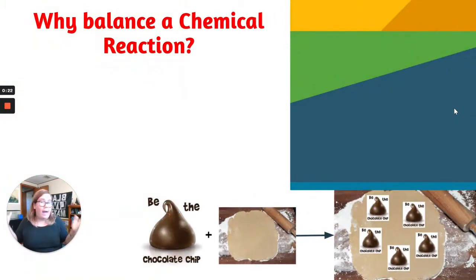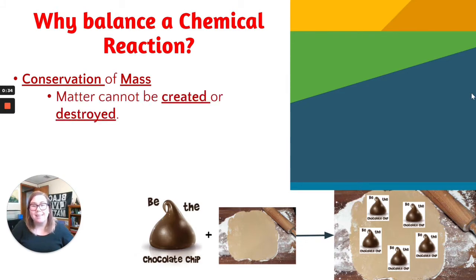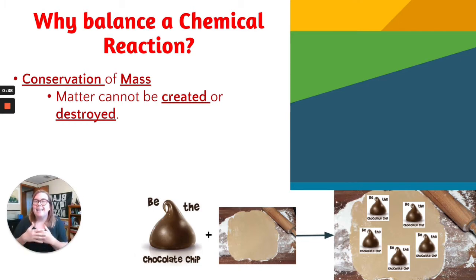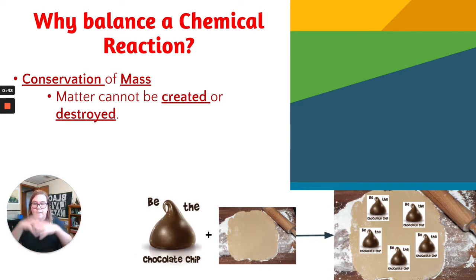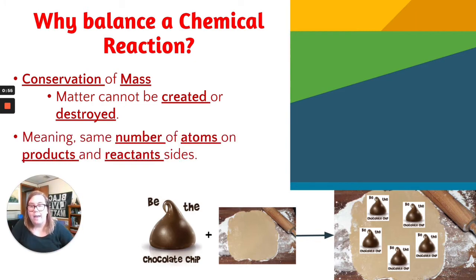So first of all, why are we bothering to balance a chemical reaction and what exactly does that mean? The main reason is because of this thing called conservation of mass. Basically that means that matter — the stuff that makes something have mass — it cannot be created or destroyed. All that has ever existed has always existed and always will exist; it just changes form. So that means that when a chemical reaction happens, all the stuff that goes in has to also come out of that reaction.